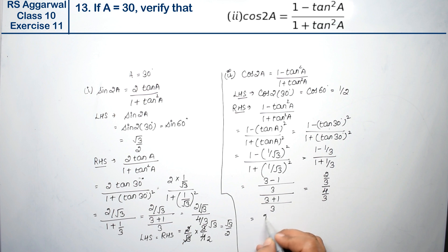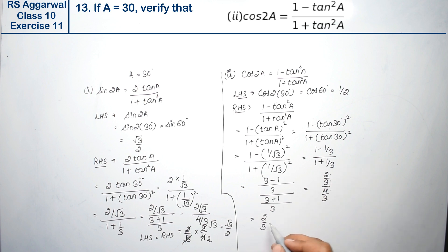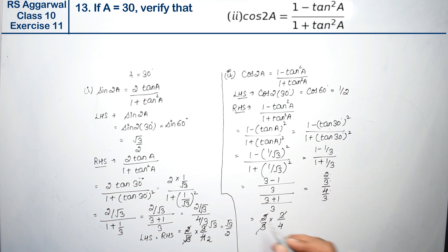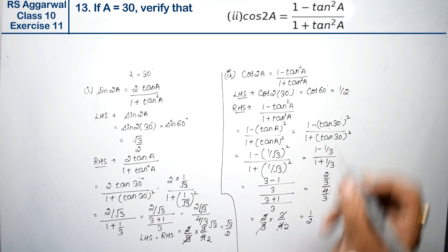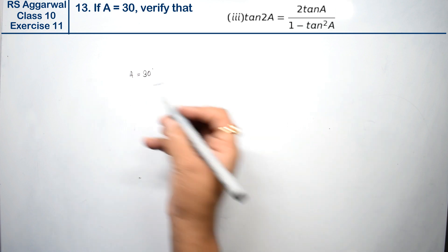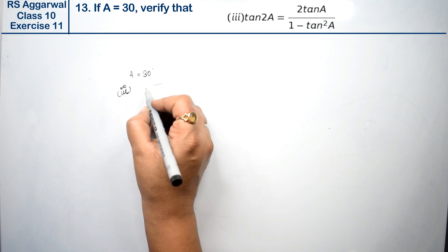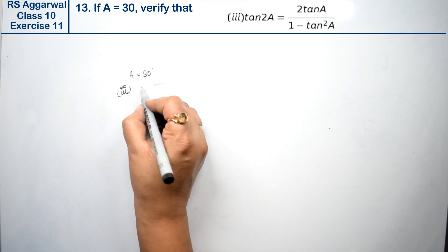This can be written as A/B × D/C. The 3s cancel, giving 2/4 = 1/2. And that is exactly what we got on the left hand side. Hence left hand side equals right hand side. Let's do the third part: verify that tan 2A equals 2 tanA upon (1 - tan²A).